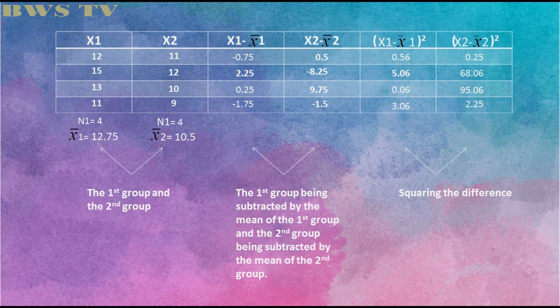In the last two columns, square the difference of the same group to get the answer. For example, in column x1 minus x̄1, we have negative 0.75 being squared to get 0.56. Then add all the answers in the last two columns to get the summation.